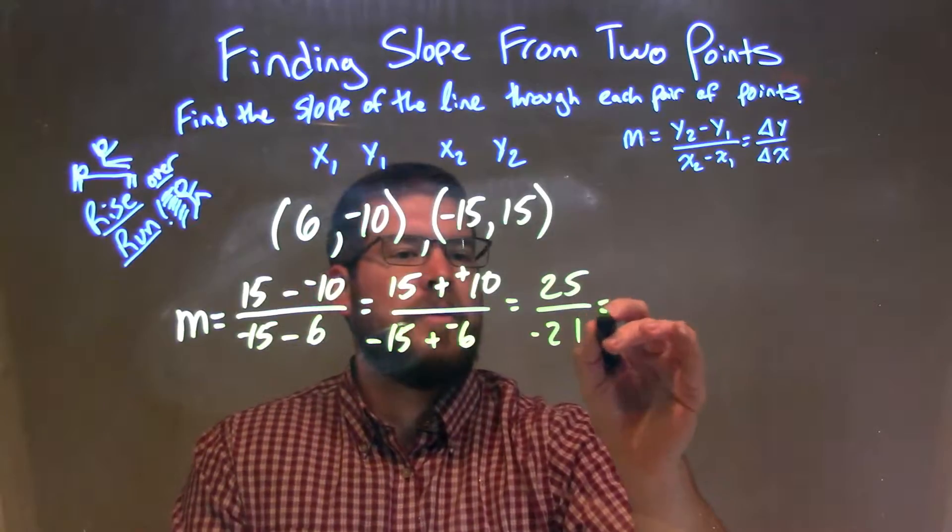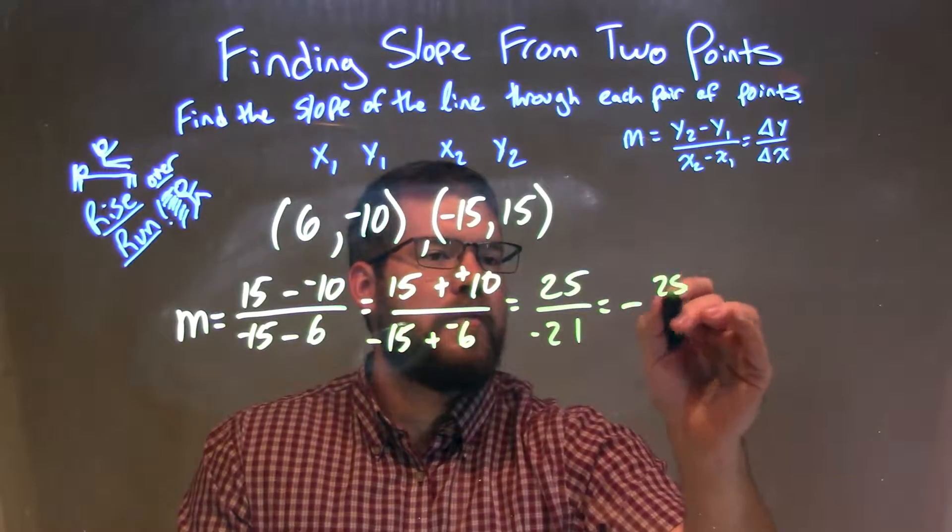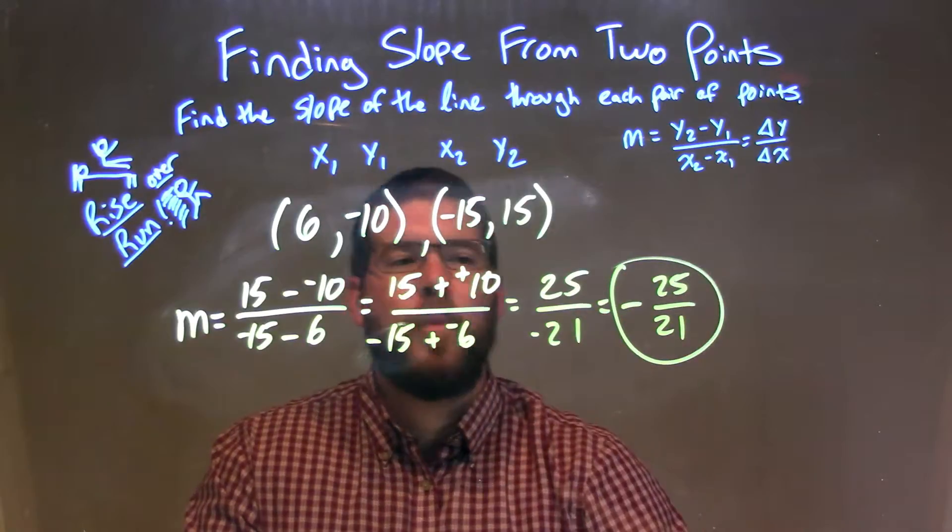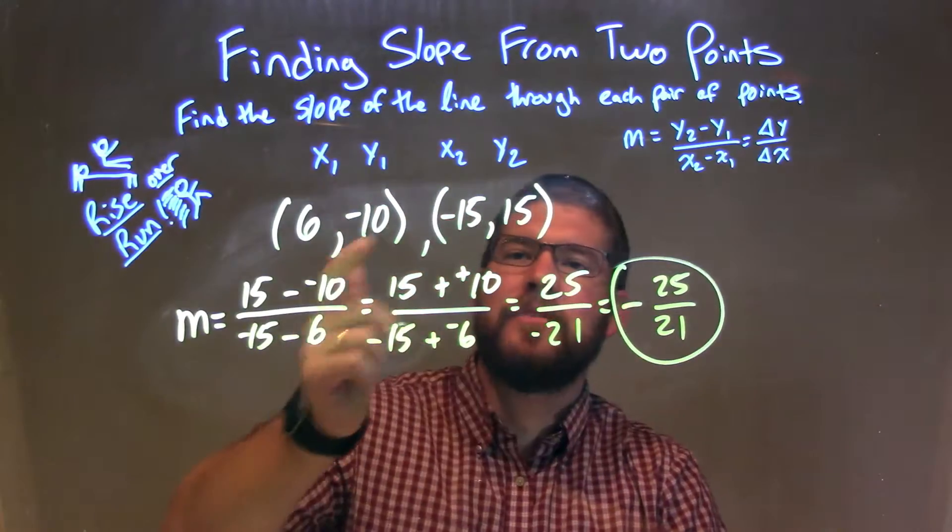Let's rewrite this with the negative out front. 25 over 21, and there we have it. We have our final answer, our slope between these two points.